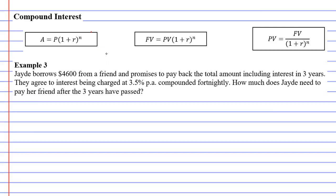In this video, we're going to complete example three. It says that Jade borrows $4,600 from a friend and promises to pay back the total amount including interest in three years. They agree to interest being charged at 3.5% per annum, compounded fortnightly.